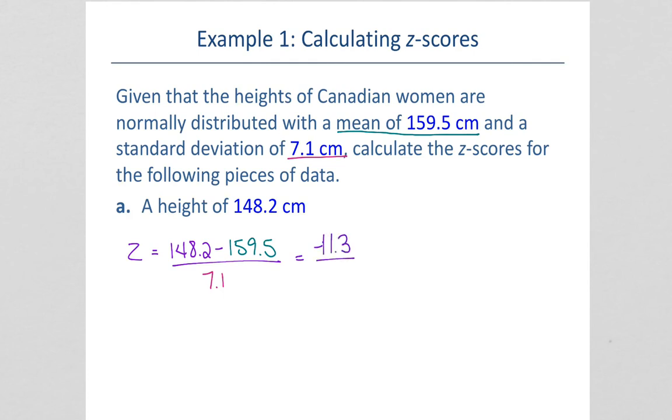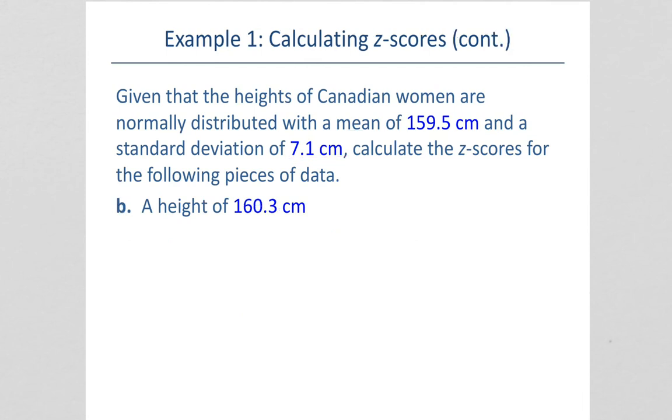We get negative 11.3 divided by 7.1, or approximately 1.59. We don't really use the negative when we talk about it. We say that this data point is 1.59 standard deviations below the mean. This person is shorter than average.